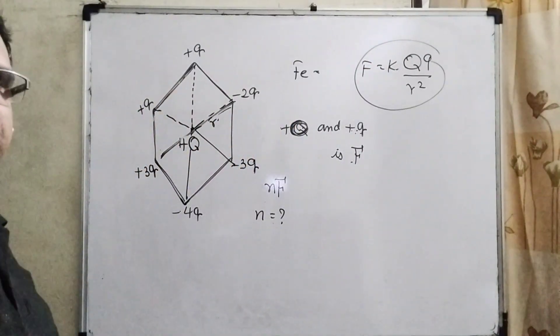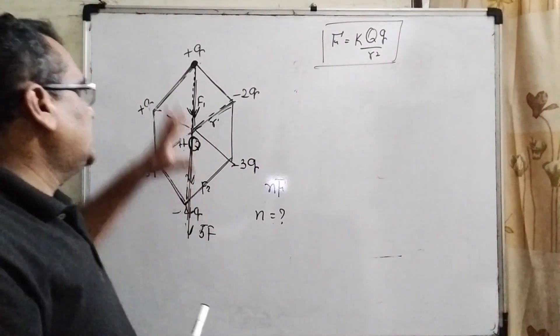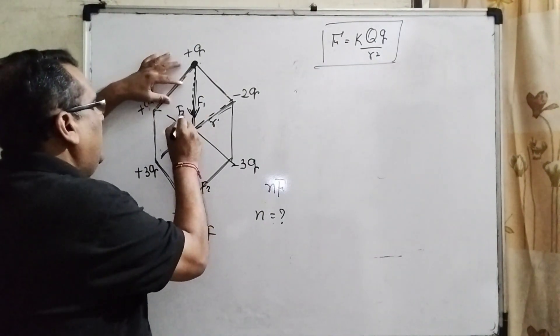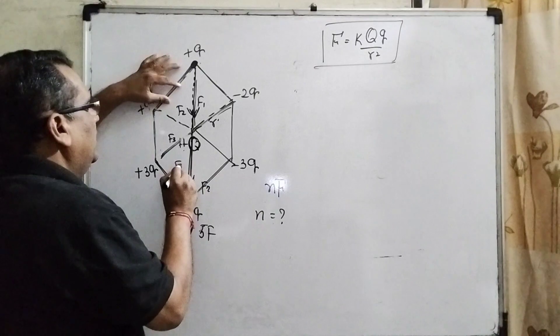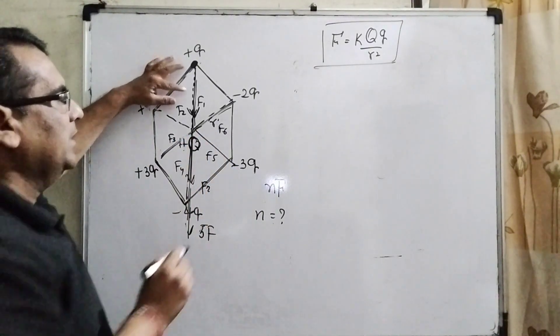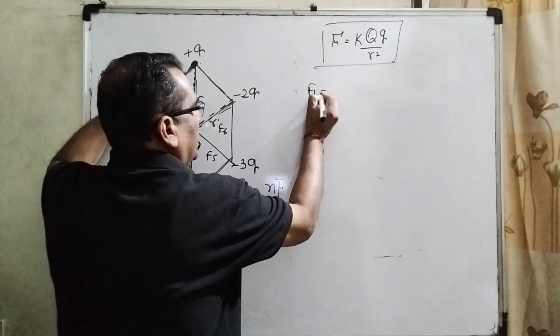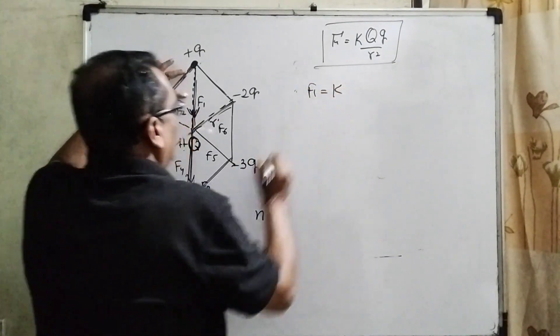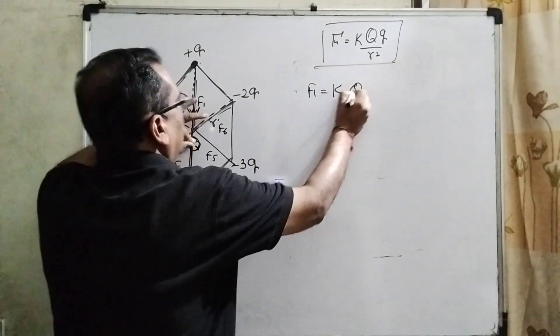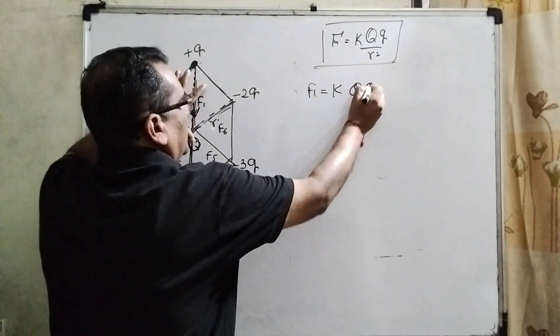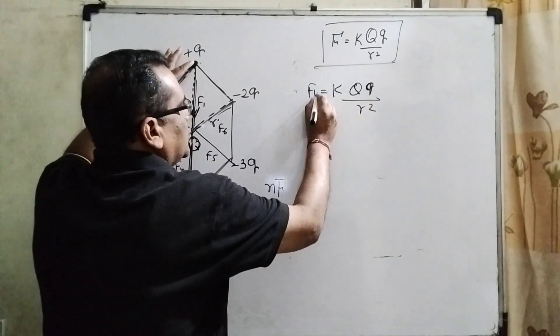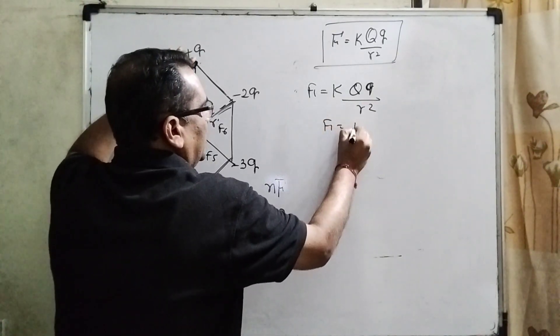Now, let us first, we have to find out the force F1, F2, F3, F4, F5 and F6. Okay. So, here F1 is k, what is the center charge is Q and this charge is small q and the distance is r square. So, F1 is equal to F.